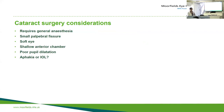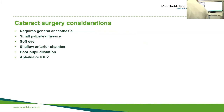Pediatric cataract surgery requires general anesthesia. The eyes are small so be careful with the type of speculum — use one that is small and soft and does not lift the eye to prevent pooling of fluid. The anterior chamber is very small, about 1.2 millimeters, leaving little margin for error. Pupils don't dilate well, so intracameral phenylephrine is worth considering. You then must decide whether to leave the child aphakic or use an implant.